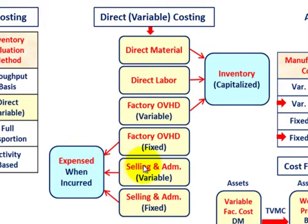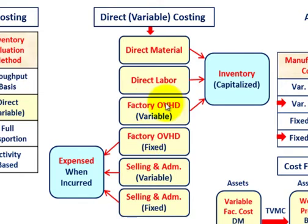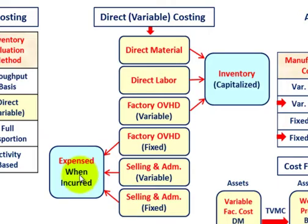When talking about selling and administrative expenses, I'm lumping all those overhead departments into them — it may be engineering, research, whatever it is. I'm representing that as selling and administrative costs. The key difference with direct variable costing is with factory overhead: only the variable portion goes into your inventory account and is capitalized. The fixed portion of factory overhead is expensed when it's incurred.